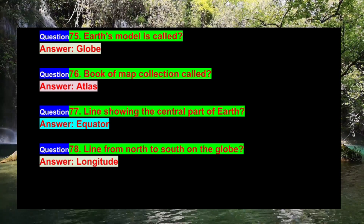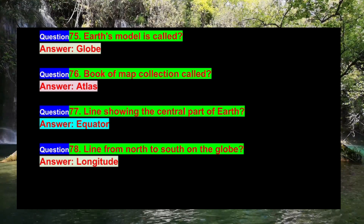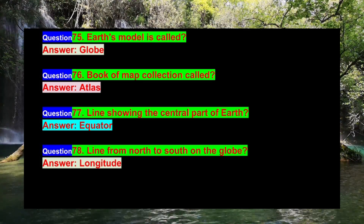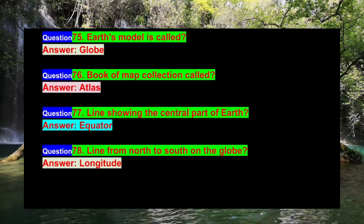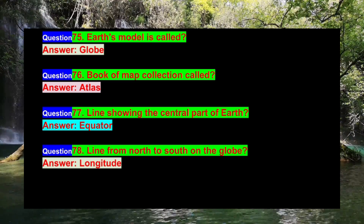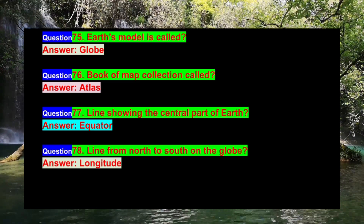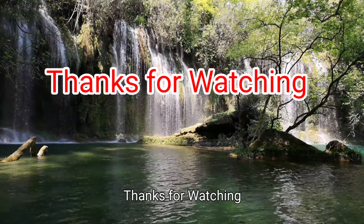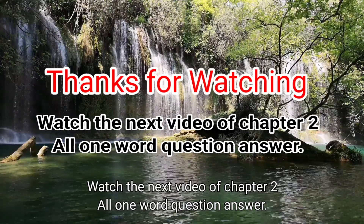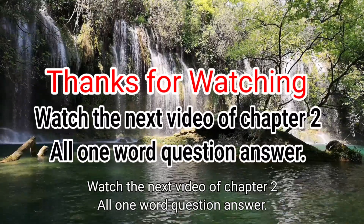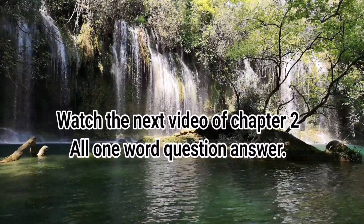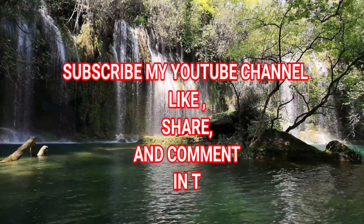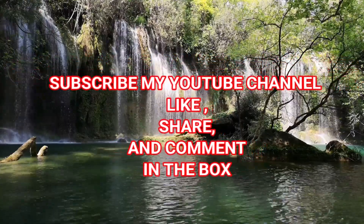Question 77: Line showing the central part of earth? Answer: Equator. Question 78: Line from north to south on the globe? Answer: Longitude. Thanks for watching. Watch the next video of Chapter 2 for all one-word question answers. Subscribe, like, share, and comment.